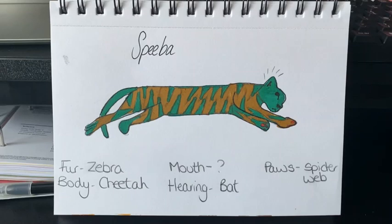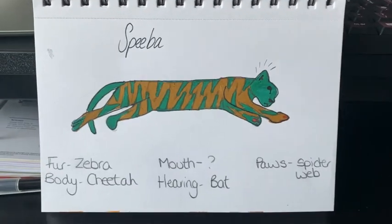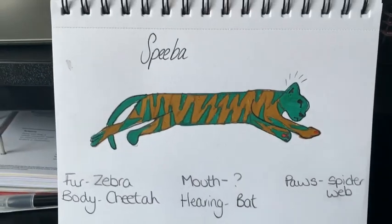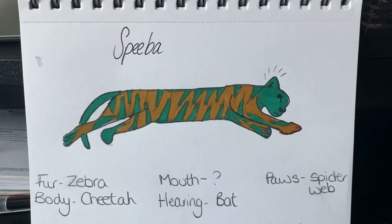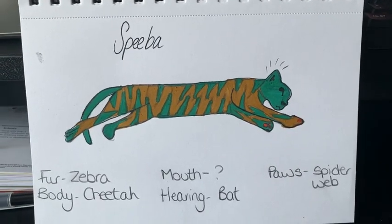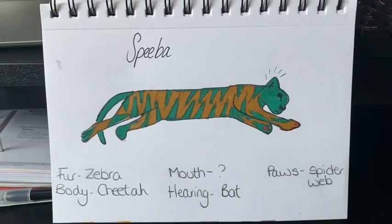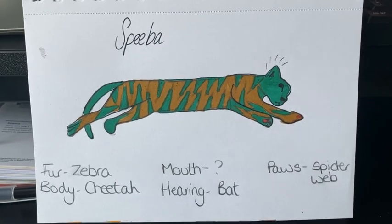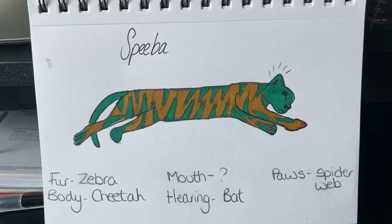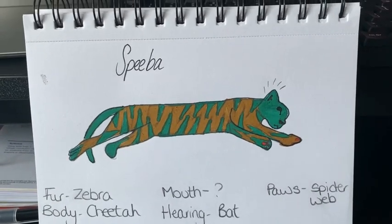I've given my creation the name 'Spieber' — I've taken some letters from each of the animals' names to create one name. I actually did make a model of Spieber, but unfortunately Molly used it as a chew toy and it has been completely destroyed!